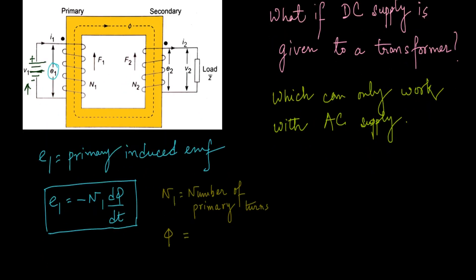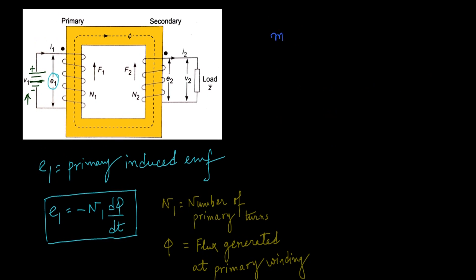We know MMF or magnetomotive force is equal to NI, or number of turns times the current flowing through a particular coil. Here the current I1 is flowing through this N1 coil, so the flux φ1 is generated through this coil and this flux is linking with the secondary through this path.